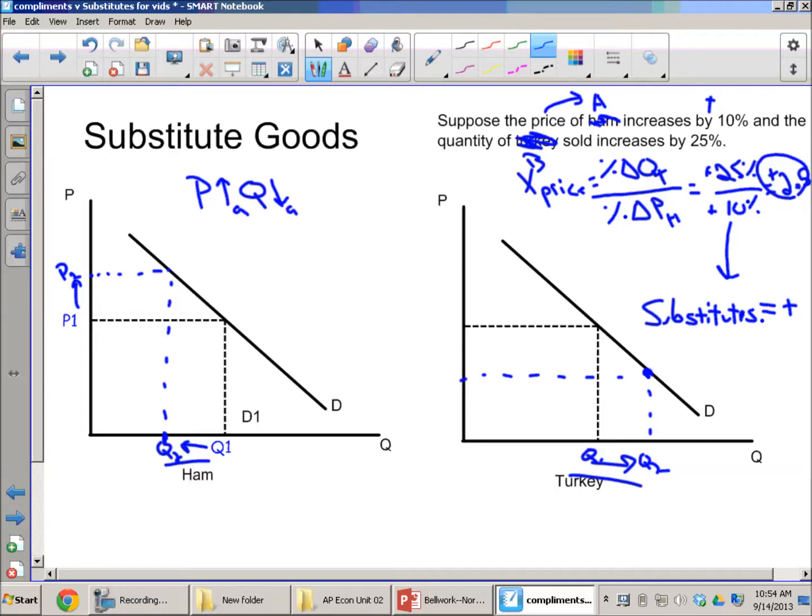Let's just call these A—the price of A and the quantity of A. So then on the other hand, we know that the good is a substitute. If we're going to buy less ham in this case, we're going to buy more turkey in this case. So the quantity of good B is going to go up.